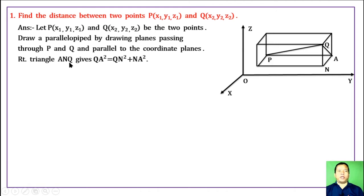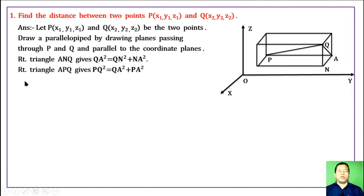Applying Pythagoras Theorem to right triangle ANQ, we get: QA² (hypotenuse squared) = QN² + NA².